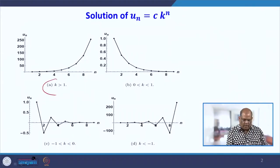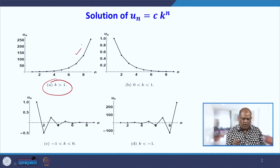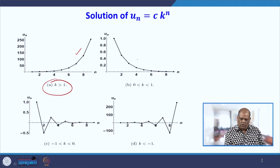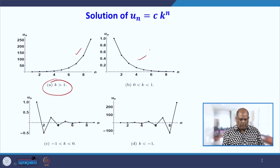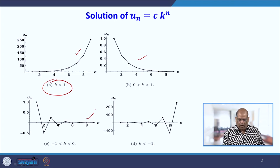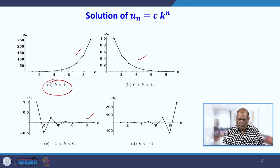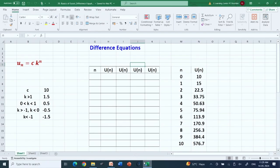For example, if k is greater than 1, as n increases the solution becomes unbounded. When k lies between 0 and 1, as n increases the solution converges to 0. If k lies between minus 1 and 0, there is oscillatory behaviour — a damping oscillation where the solution ultimately decreases. And if k is less than minus 1, we have the same oscillatory behaviour but with increasing magnitude. Now we will replicate these solutions with the help of Microsoft Excel.